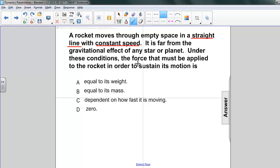If the velocity is constant, that means it's not changing. And if it's not changing, that means that there must be no non-zero net force acting on the rocket. So if there's no non-zero net force, the only net force there can possibly be is a zero net force. So our answer is D.